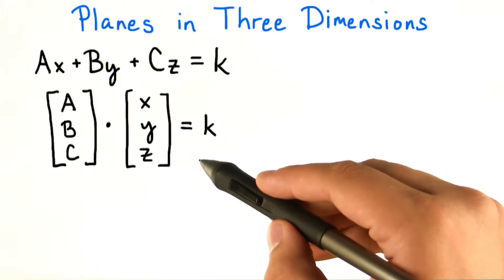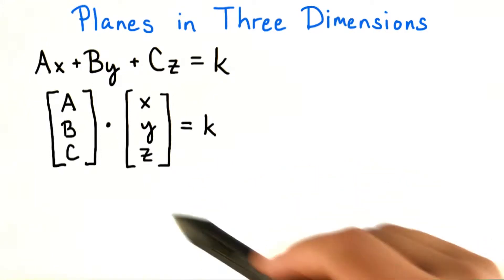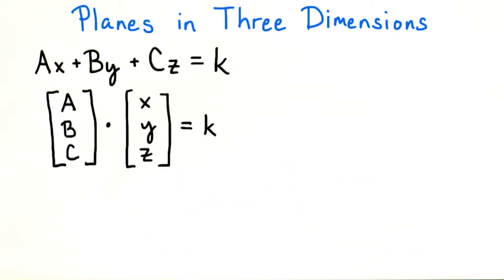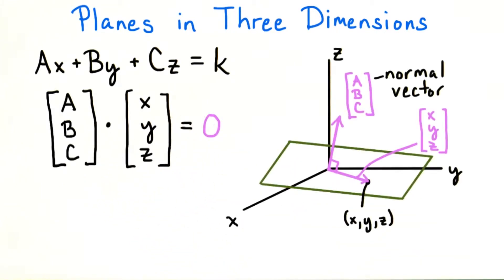Another way to view the equation ax plus by plus cz equals k is, like before, a dot product of two vectors: abc dot xyz equals k. And like before with lines, if we take abc dot xyz equals zero, that means that vectors from the origin to points xyz in the plane are orthogonal to the vector abc. Thus, abc is a normal vector to the plane.